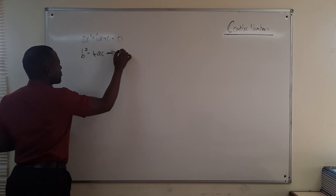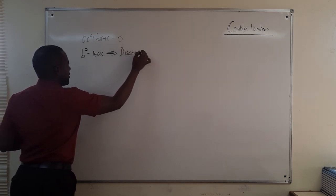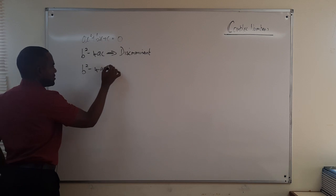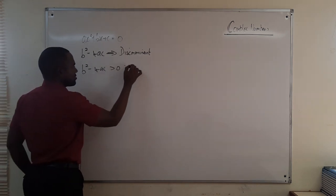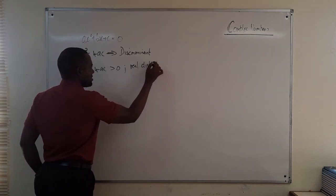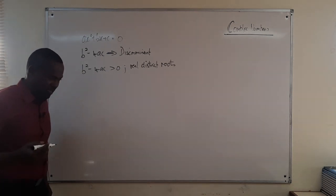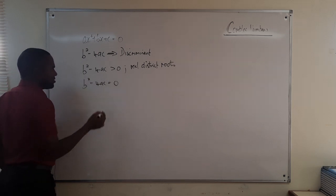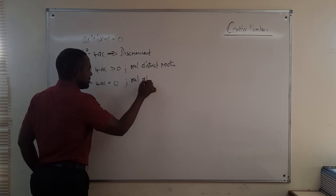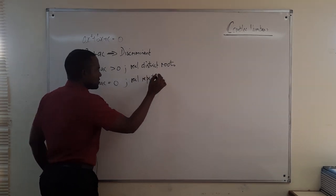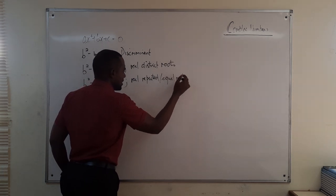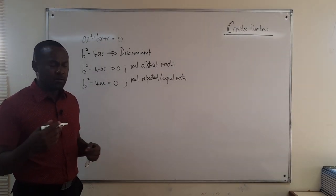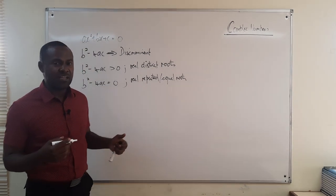When b squared minus 4ac is greater than zero, the quadratic has real distinct roots, meaning the graph of the quadratic cuts the x-axis at two distinct points. When b squared minus 4ac is equal to zero, we see real repeated or equal roots, and the graph of the quadratic just touches the x-axis — the x-axis acts as a tangent to the quadratic.